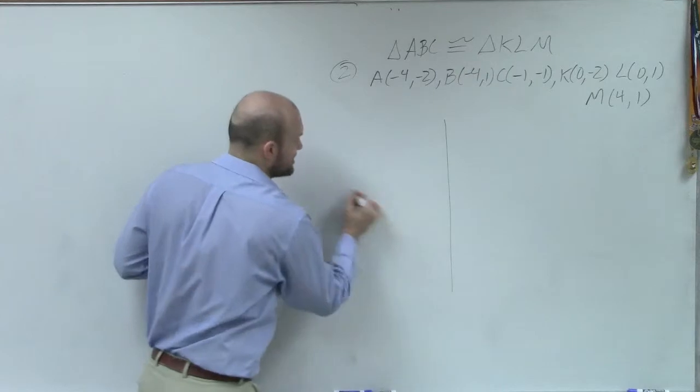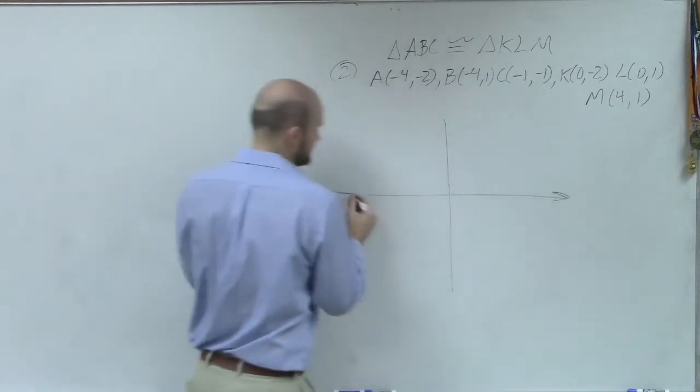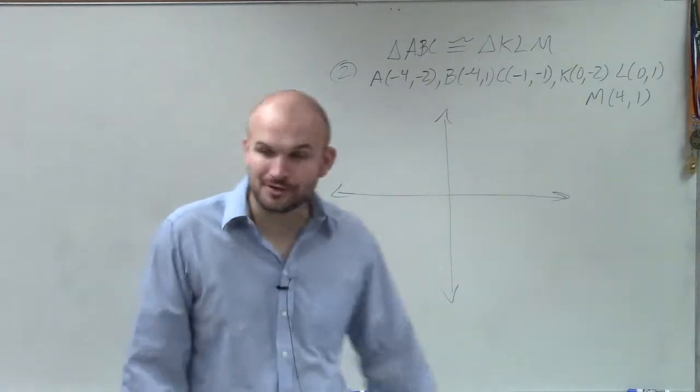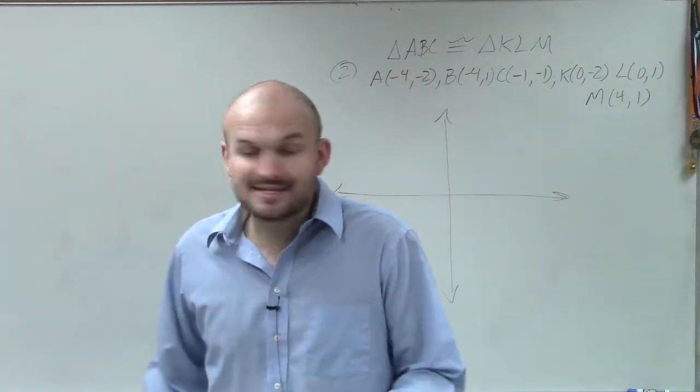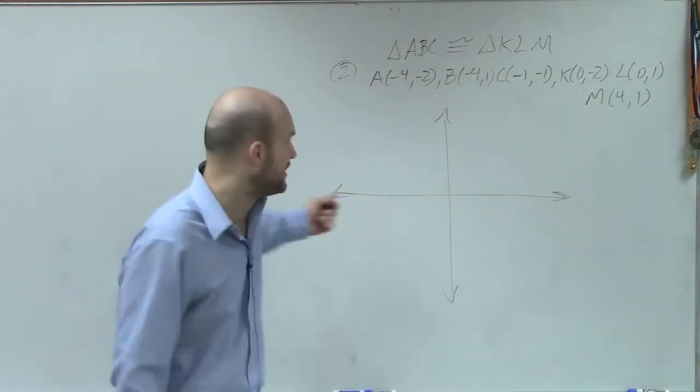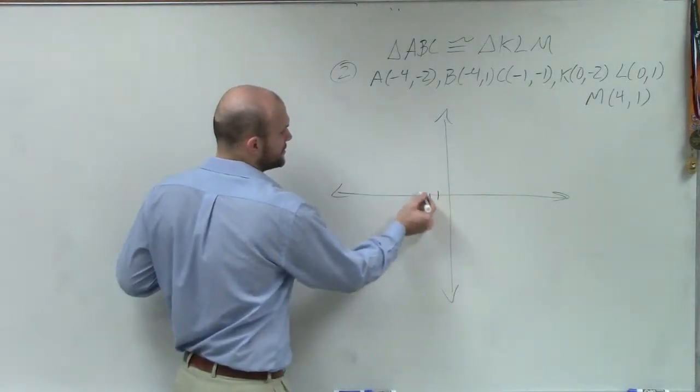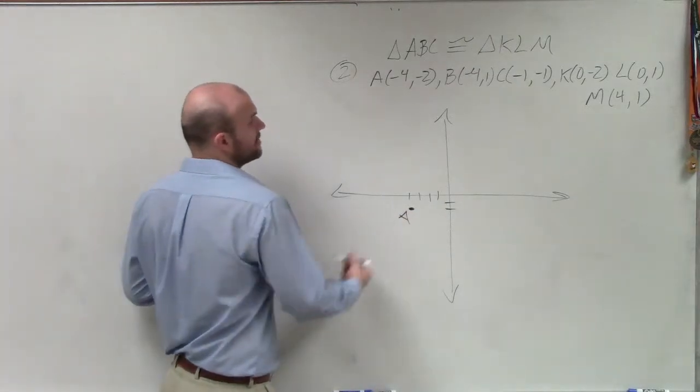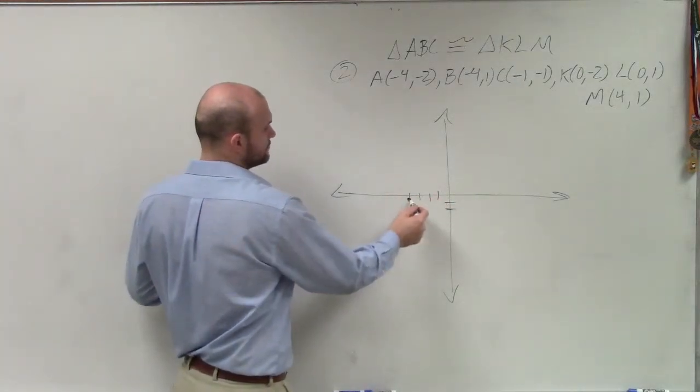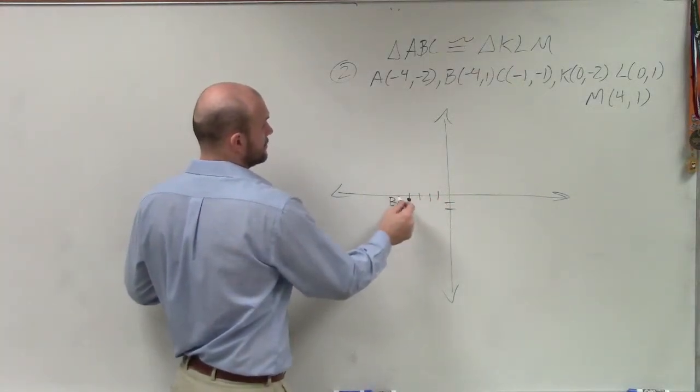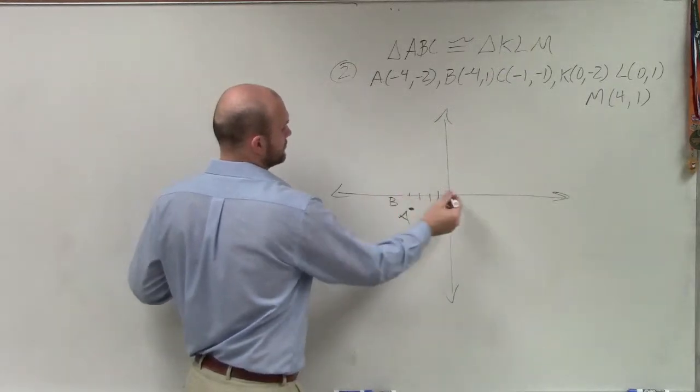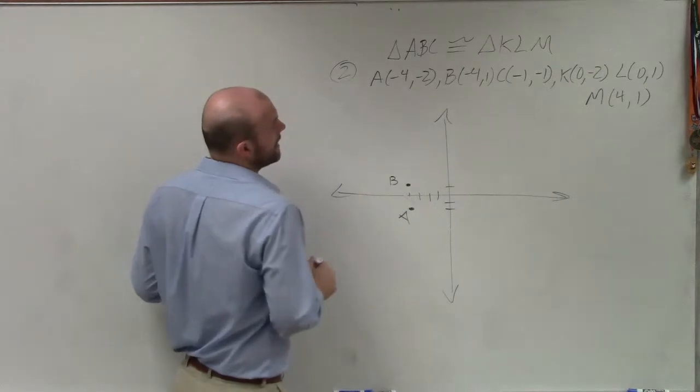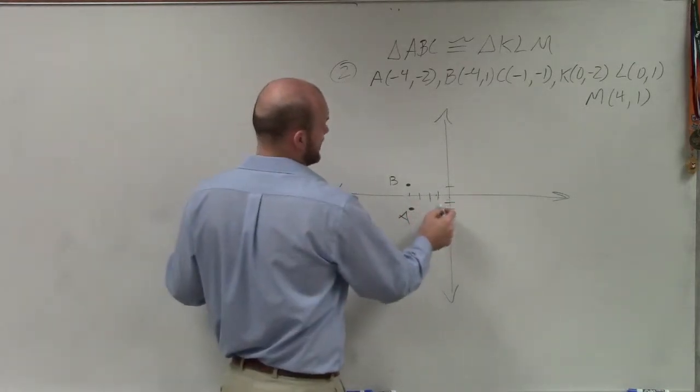So since we have coordinate points, we're going to want to plot these. Before you decide I can do this or I can't do this or I don't know what to do next, let's at least plot the points and label them. So A is going to be negative 4, 2. B is positive 1. And C is negative 1, negative 1.